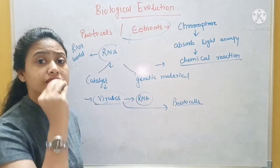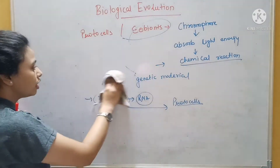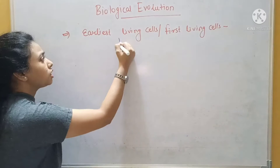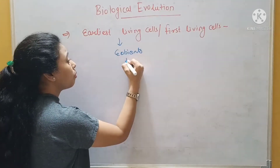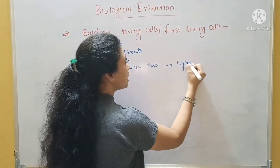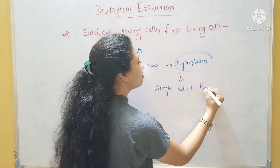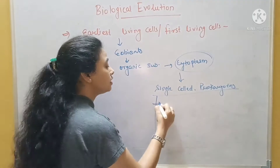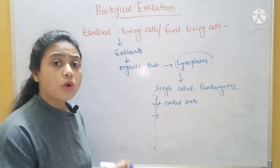Now the next category is the earliest cell — the first living cell. It was a single-celled prokaryote. The eobions gained further complexity — they started collecting more organic substances and started making cytoplasm. The first living cell was the prokaryote, which had naked DNA, and they were able to form their own protein.